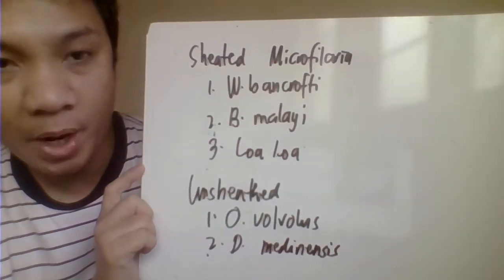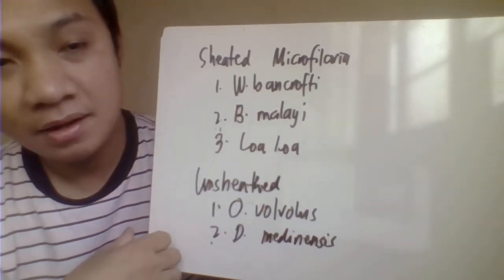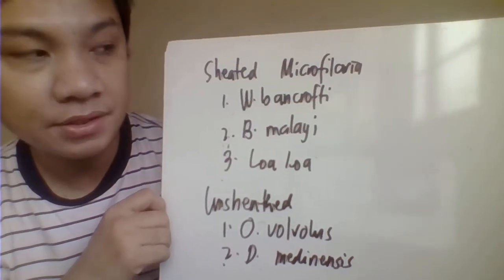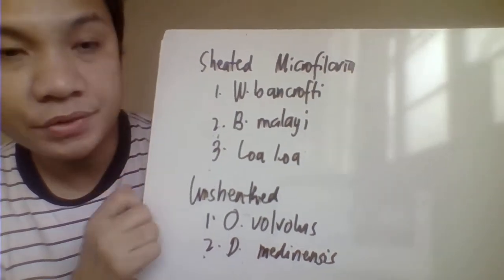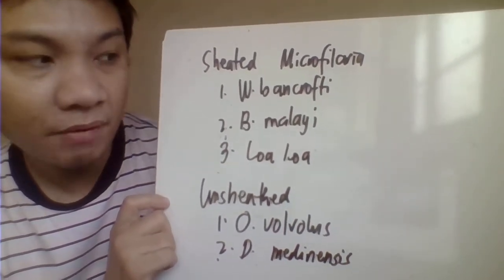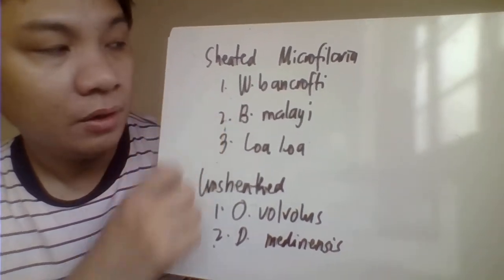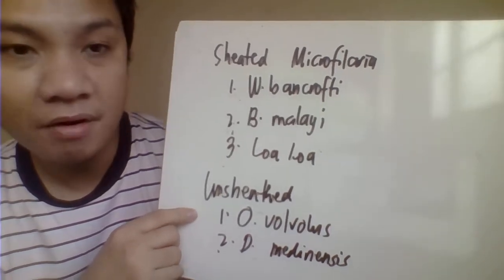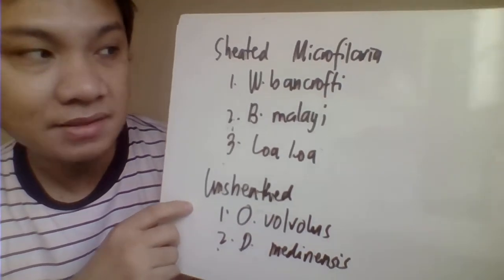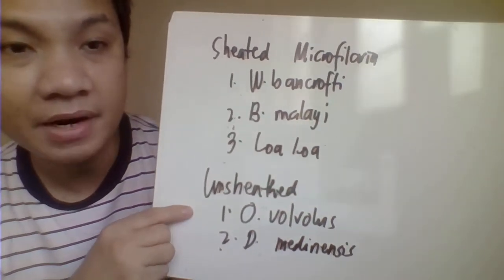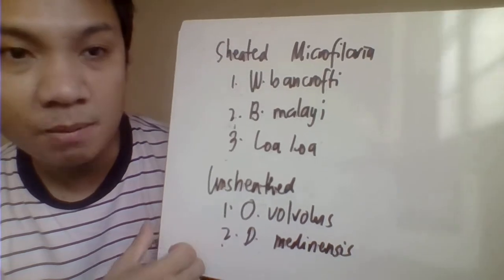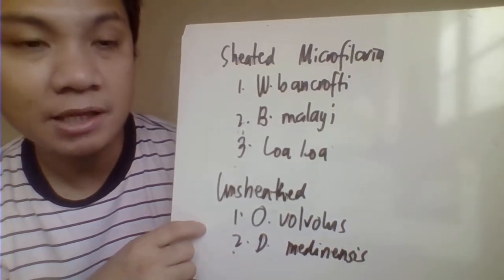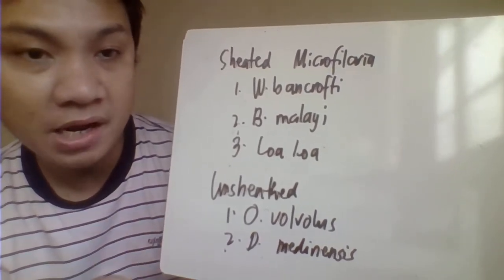For the different species of filarial worms, we classify them based on sheathed and unsheathed microfilaria. For the sheathed species, we have Wuchereria bancrofti, Brugia malayi, and Loa loa. Wuchereria bancrofti inhabits the lymphatic vessels, specifically below the diaphragm. The microfilaria are found in the peripheral blood, while the adult worm resides in the lymphatic vessels.